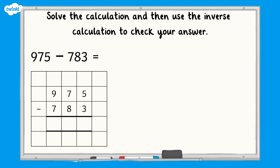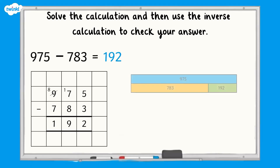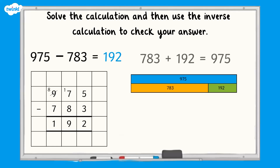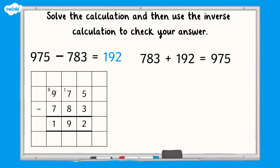How did you get on? Let's have a look. When we complete the subtraction calculation, 975 subtract 783 equals 192. Using a bar model, we can identify the inverse as 783 add 192 equals 975. Now we can complete the addition calculation to check our answer.